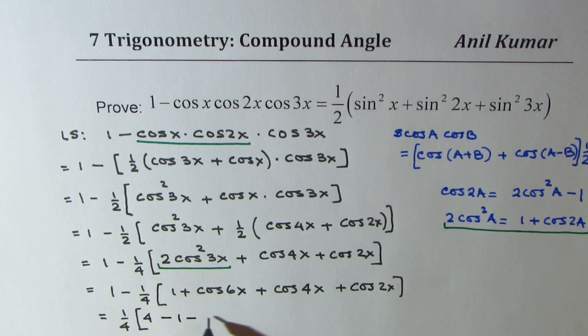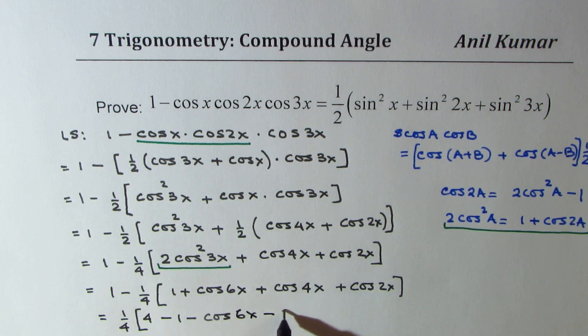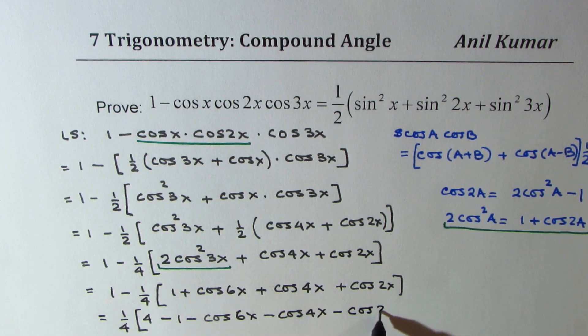So, you get minus 1 minus cos 6x. If you want, you can rearrange also. Minus cos 4x minus cos 2x. Let's continue to the next page from here onwards.